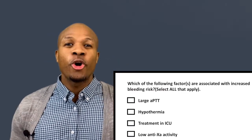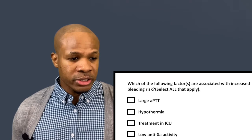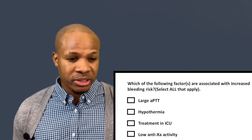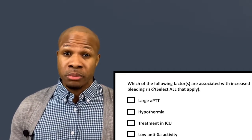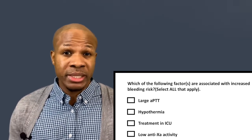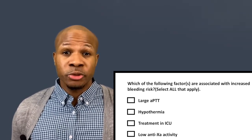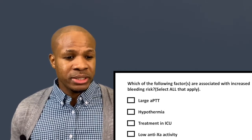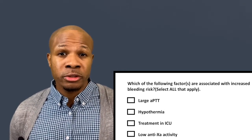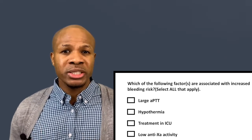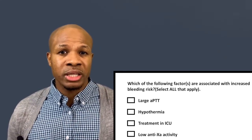Question number three asks: which of the following factors are associated with increased bleeding risk? Select all that apply. Answer choice A says large APTT — activated partial thromboplastin time — which measures the time it takes for a certain volume of blood to clot, similar to an INR.